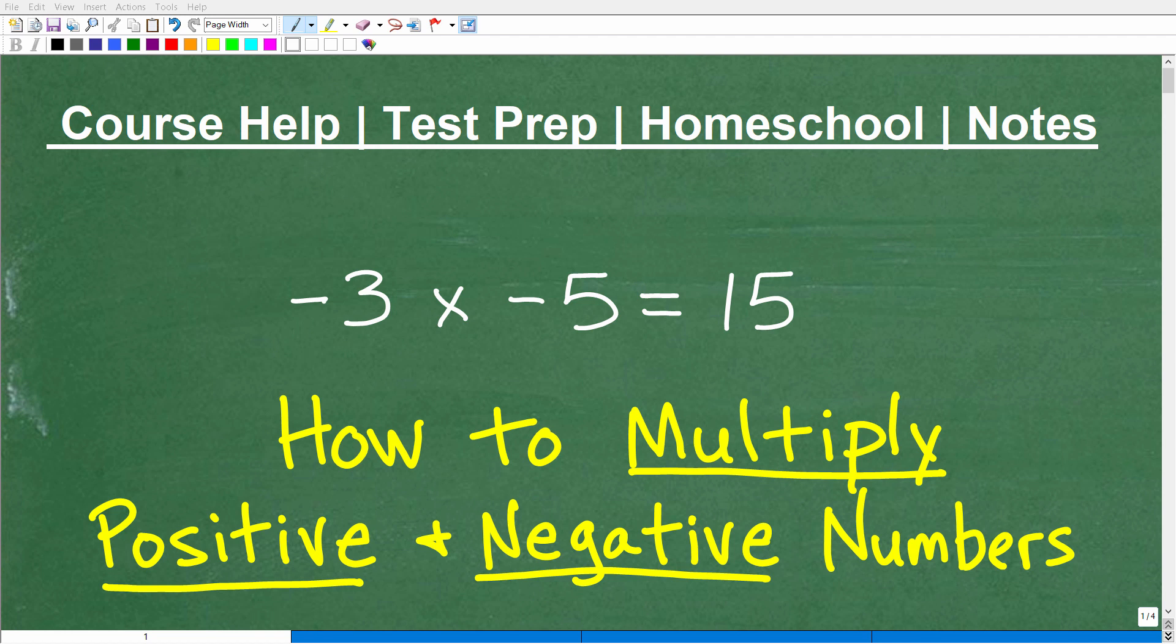Okay, let's talk about how to multiply positive and negative numbers. So I'm talking about a problem like this. Here we have negative 3 times negative 5, and the answer is a positive 15. We want to know why that is.